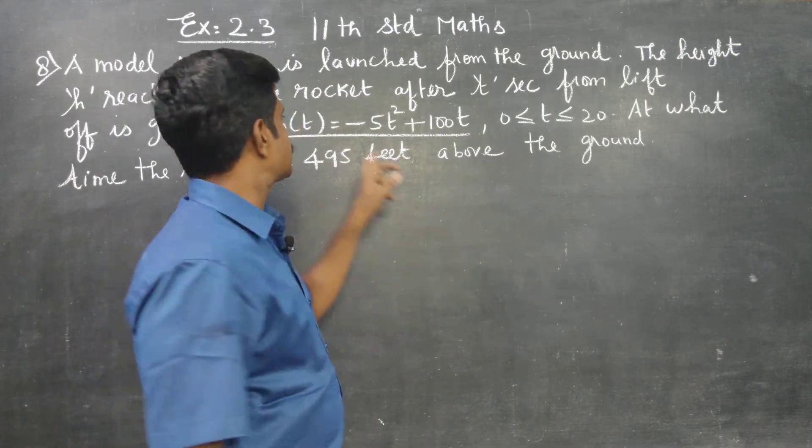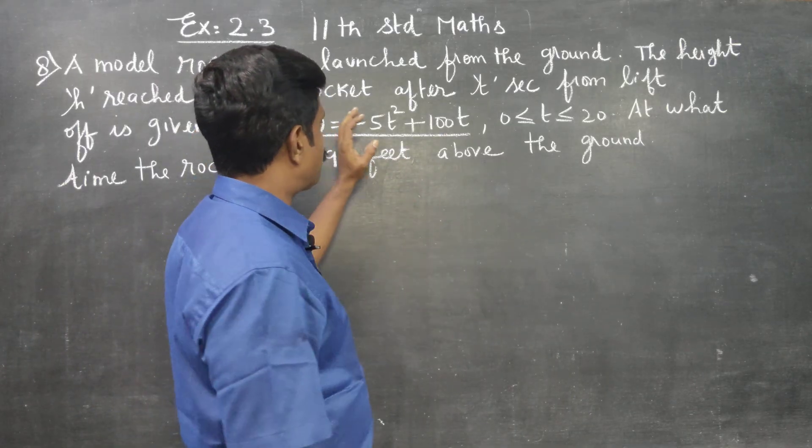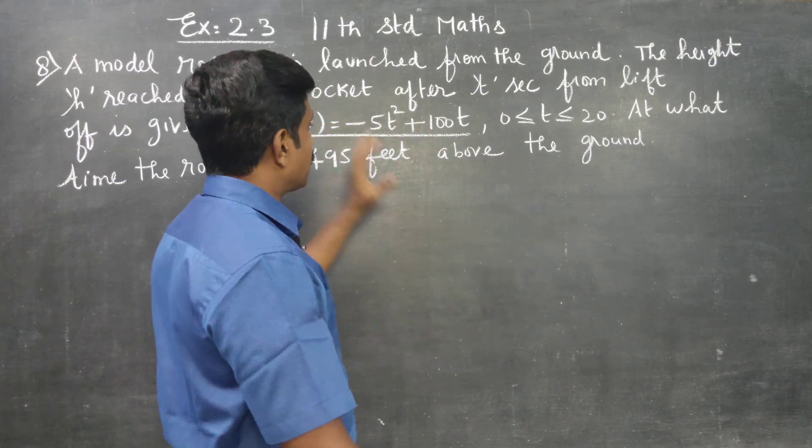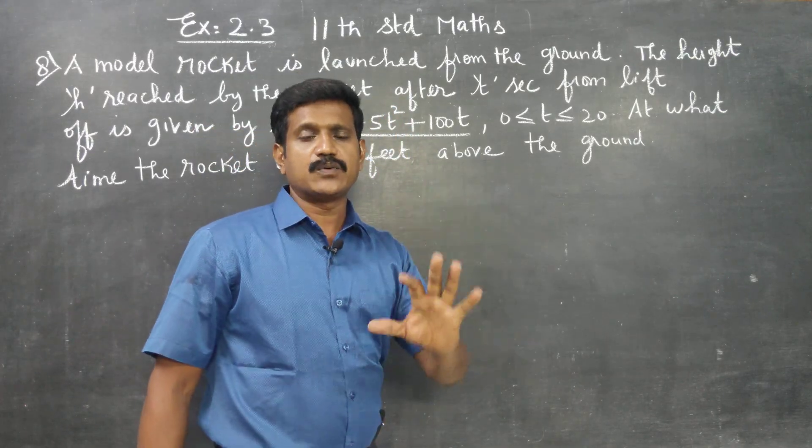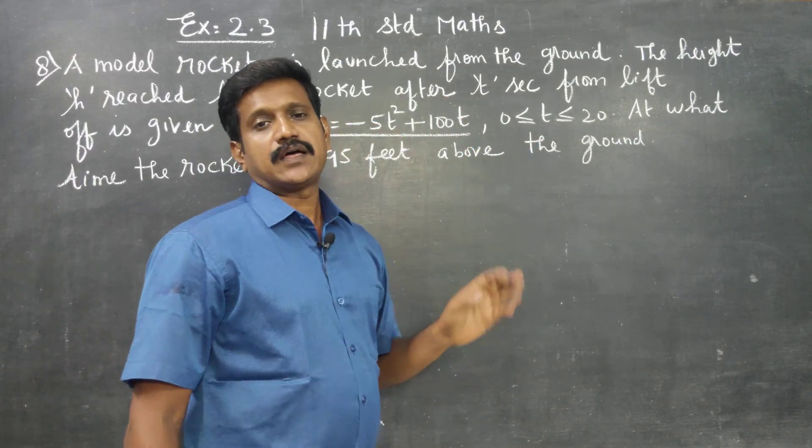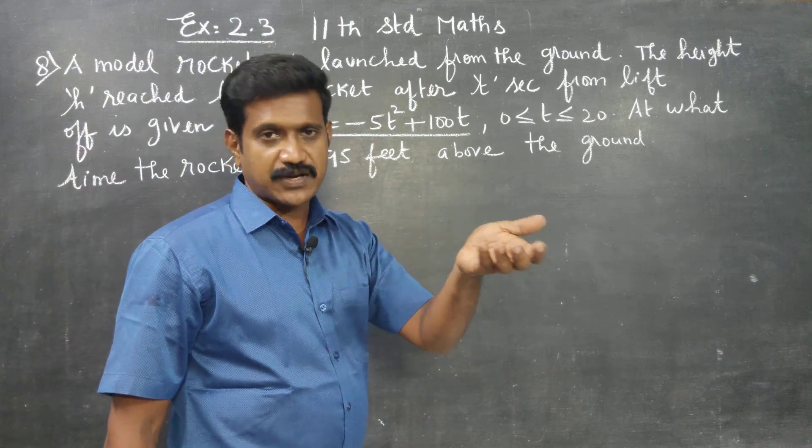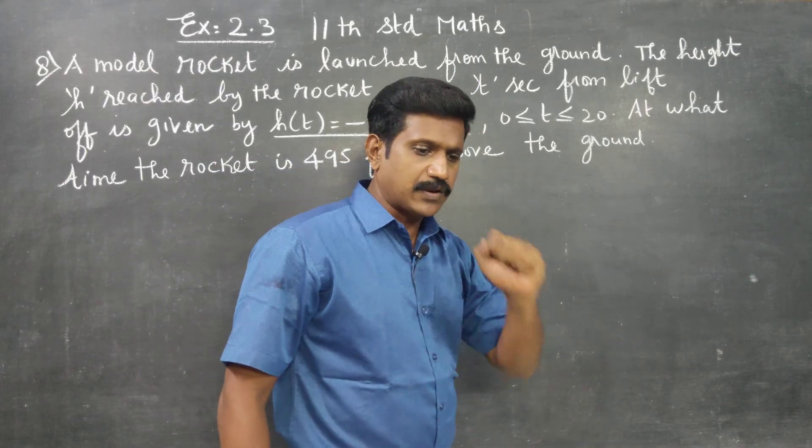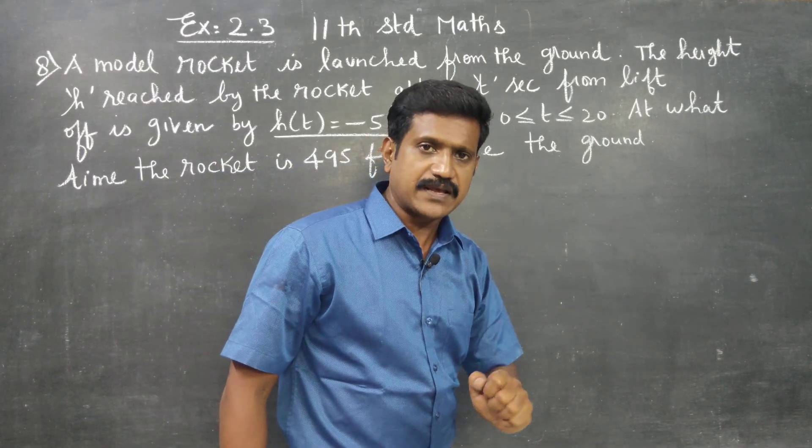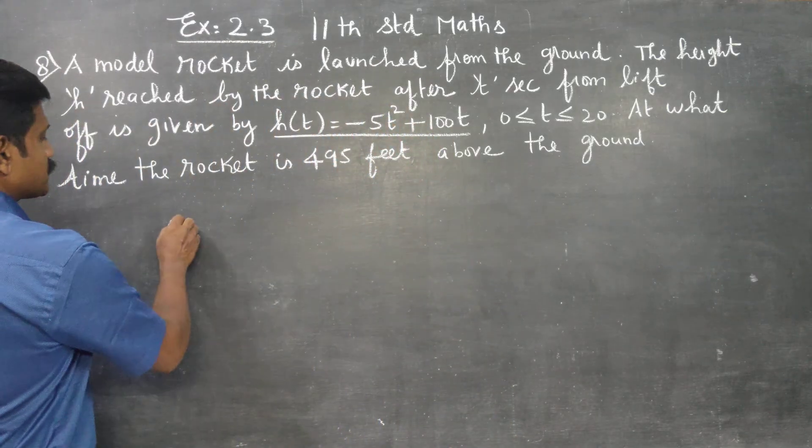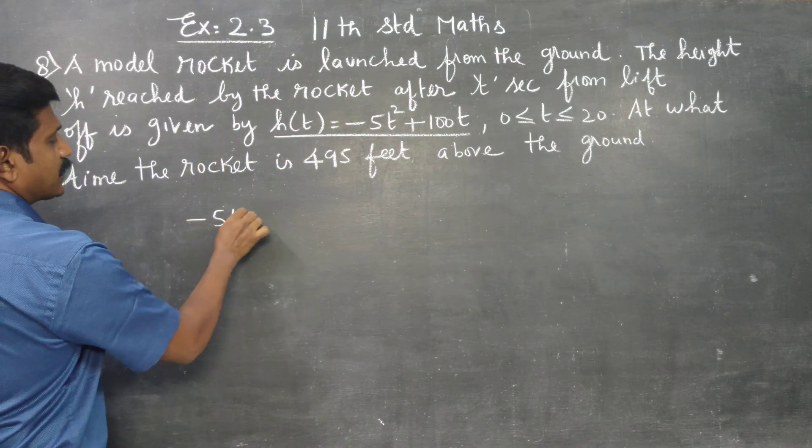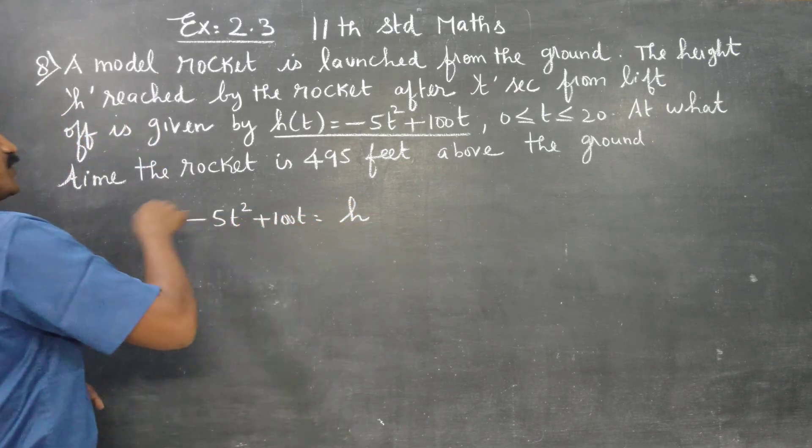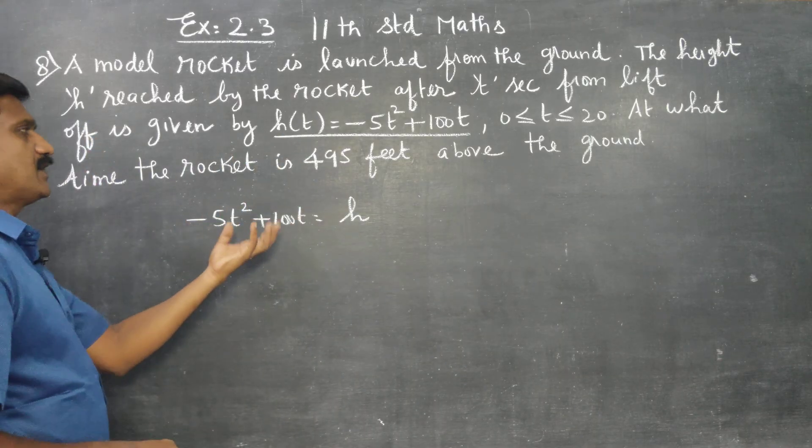This is the height. Newton's equation of motion - all of these are equations of motion. Newton's equation of motion will be used in physics. A rocket, an airplane, a helicopter - each has an equation of motion. We have the rocket equation of motion: -5t² + 100t equals height. Height is a function of t, that is h(t).